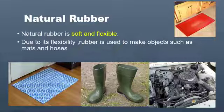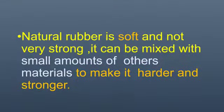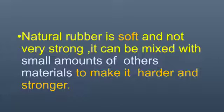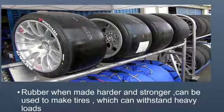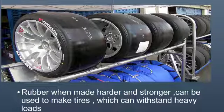Due to its flexibility, rubber is used to make objects such as mats and hoses. Natural rubber is soft and not very strong. It can be mixed with a small amount of other materials to make it harder and stronger. Rubber, when made harder and stronger, can be used to make tires which can withstand heavy loads.